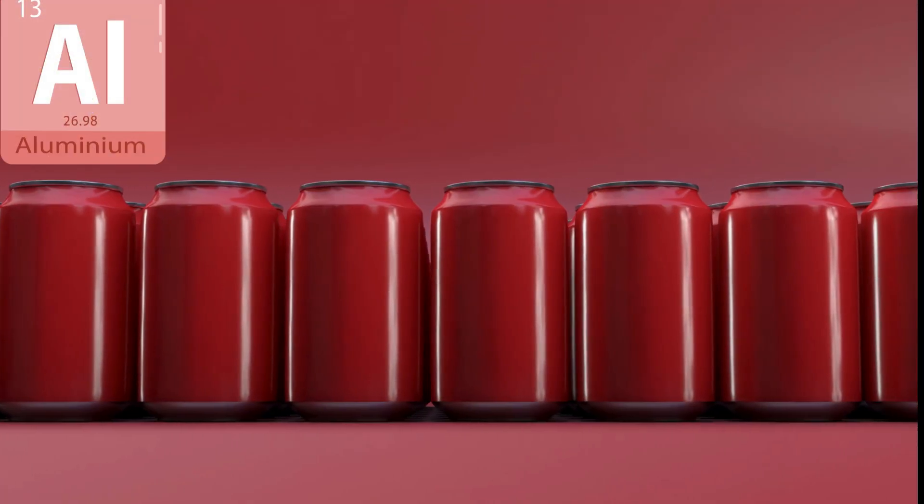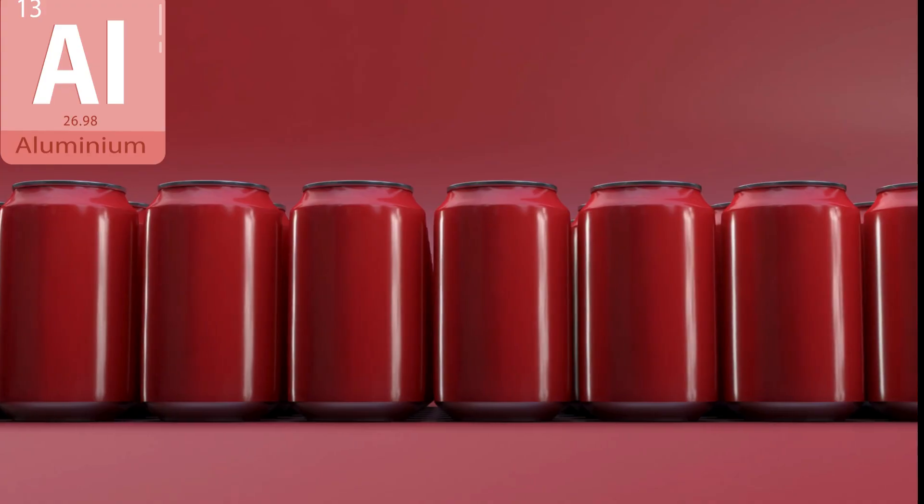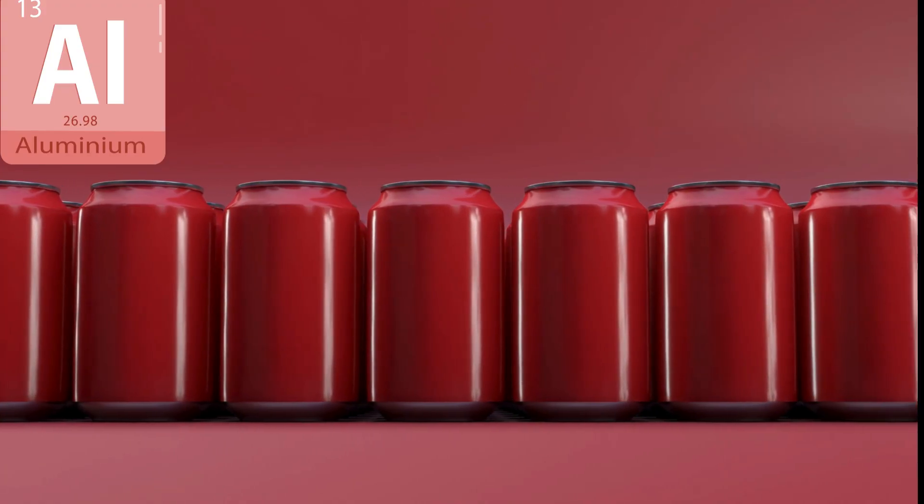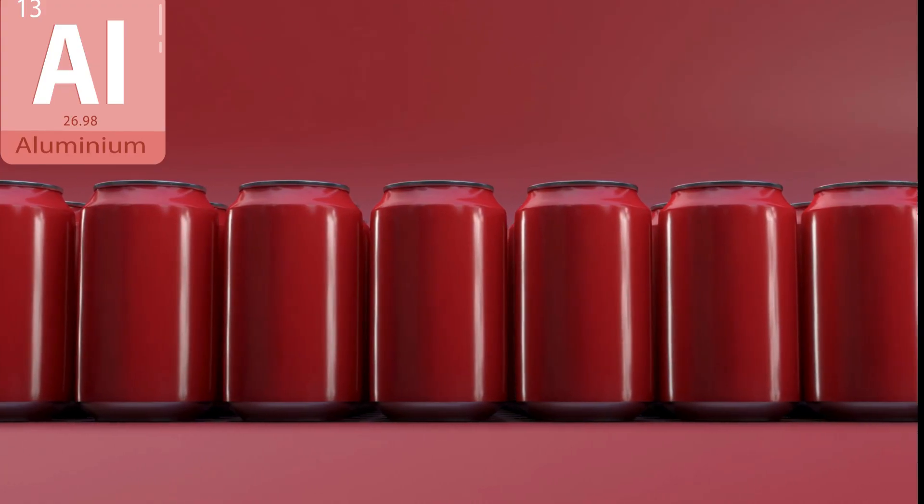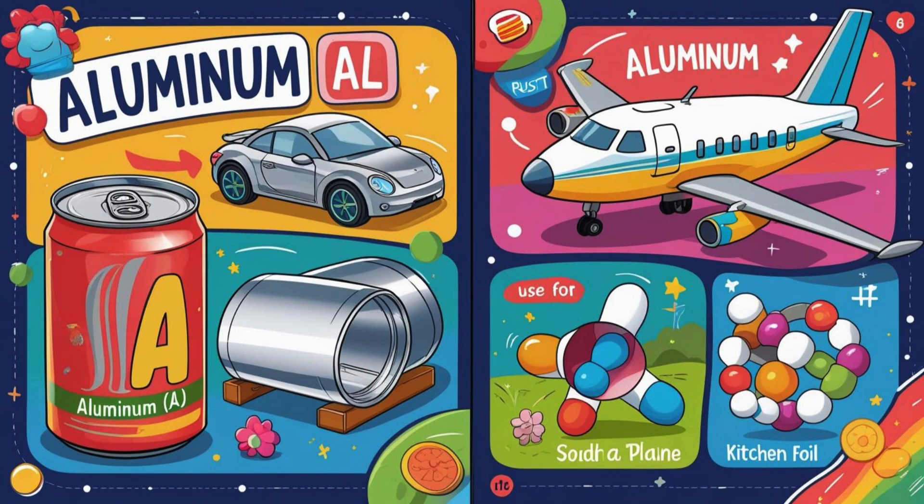Thirteen. Aluminium. Aluminium is lightweight and doesn't rust easily. That's why we use it to make soda cans, airplanes, and even kitchen foil.